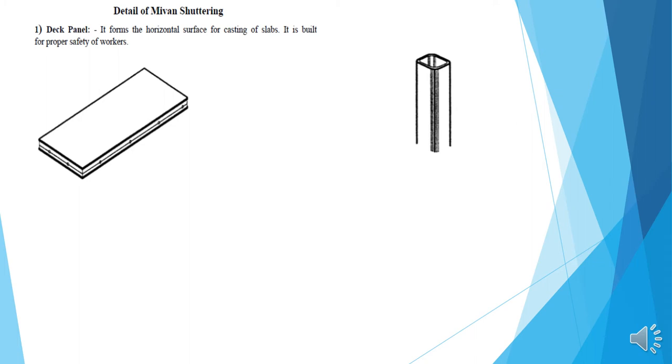Details the components of the Miwan Shuttery. Deck panel: It forms the horizontal surface for casting of the slabs. It is built on properly, of proper safety of workers. This is the image of the deck panel.